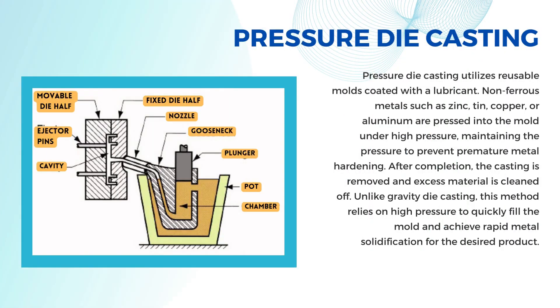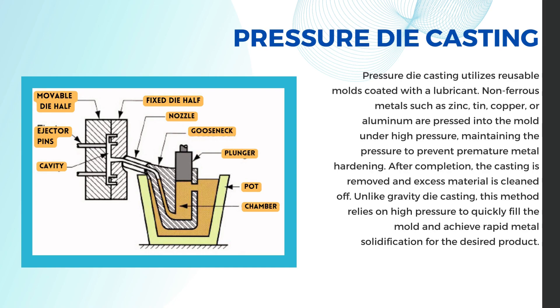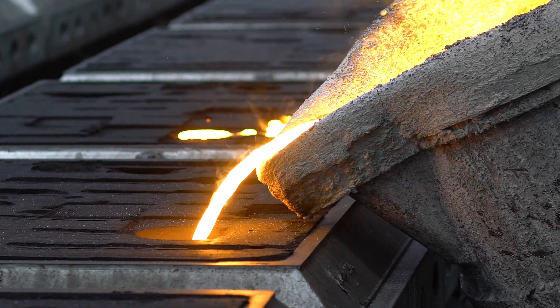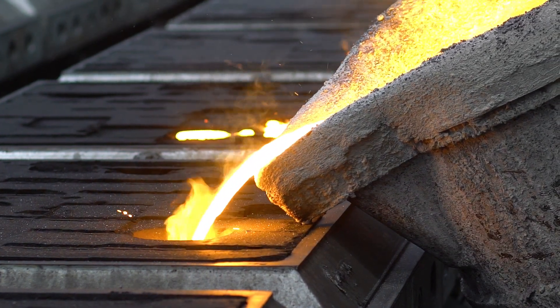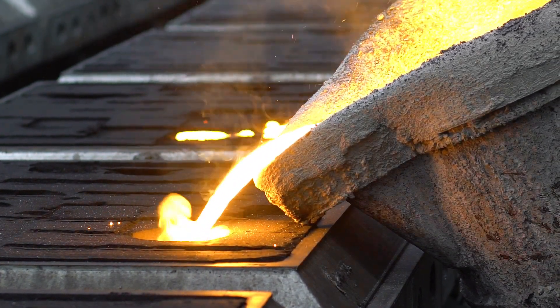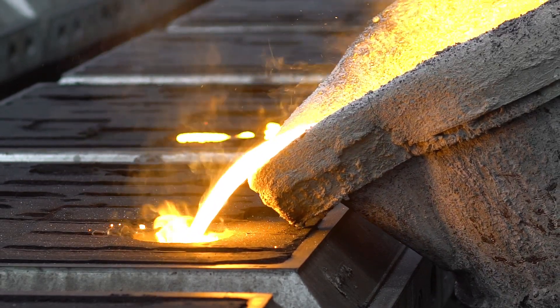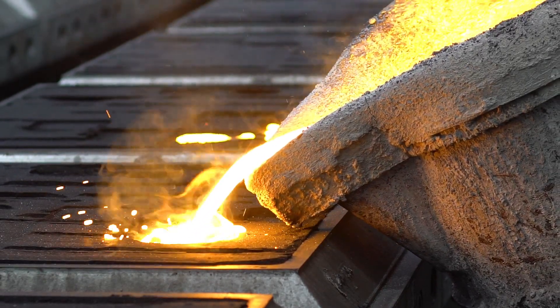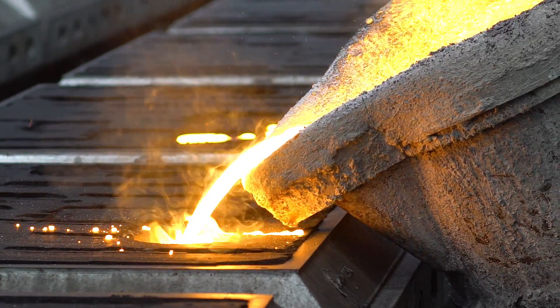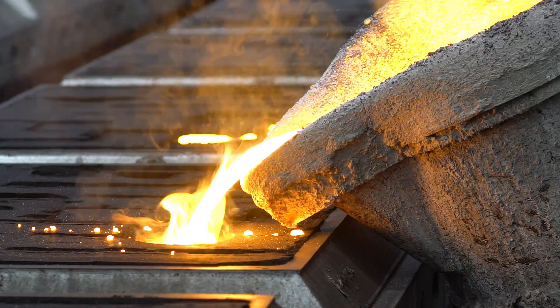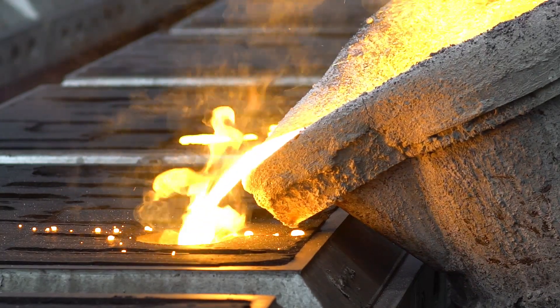Next is pressure die casting. There are two main types: low-pressure die casting, which is better for making large and simple parts, and high-pressure die casting, which is more popular when you need to make a lot of precise and complicated things.